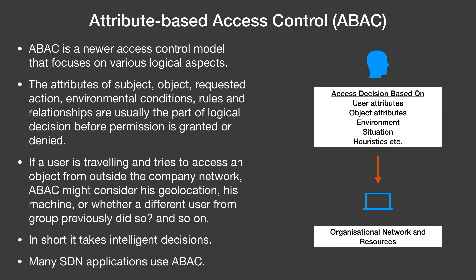Attribute-Based Access Control, or ABAC. ABAC is a newer access control model that focuses on various logical aspects. The attributes of the subject, object, requested action, environmental conditions, rules, and relationships are usually part of the logical decision before permission is granted or denied. In RBAC, access depends on the user or data role. But in ABAC, it looks at user characteristics, data attributes, and situational heuristics. For example, if a user is traveling and tries to access an object from outside the company network, ABAC might consider geolocation or timing attributes — such as whether it is a weekend. In short, it takes intelligent decisions based on many logical factors. Many SDN applications use ABAC.